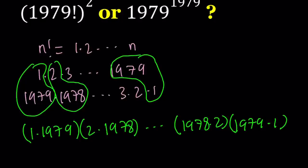1 times 1979, I'm going to group them together, multiply by 2 times 1978, and then dot dot dot, it's going to go backwards, 1978 times 2, and then finally 1979 times 1. So that's one of my numbers. And the other number is just going to be 1979. Sometimes I write one thing and say another, that happens with mathematicians sometimes. Just wanted to share that experience with you.